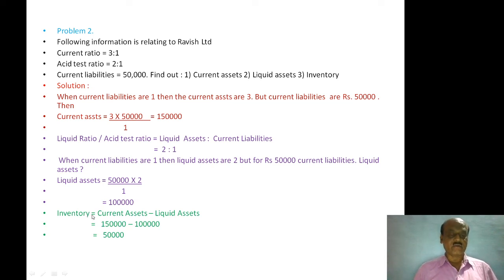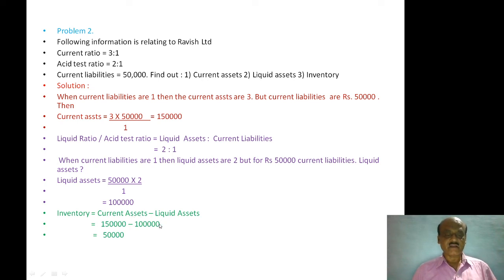Inventory equals Current Assets minus Liquid Assets. Current Assets is 1,50,000 and Liquid Assets is 1,00,000. So 1,50,000 minus 1,00,000 equals 50,000. This 50,000 is the Stock or Inventory. So Inventory is ascertained using the formula: Current Assets minus Liquid Assets.